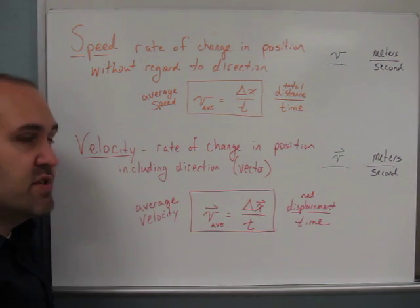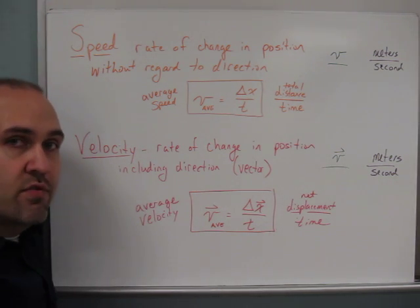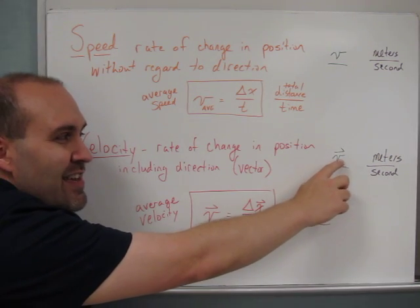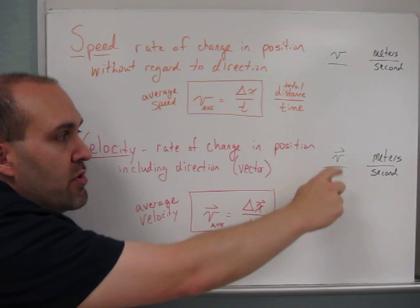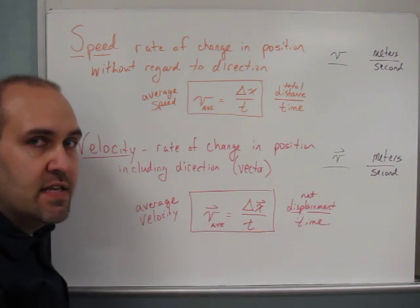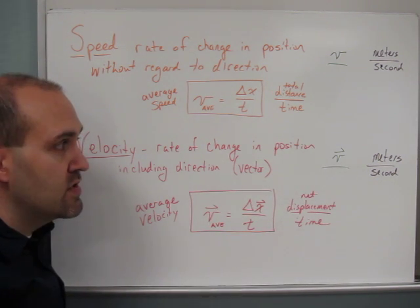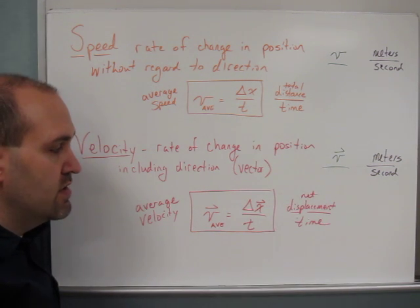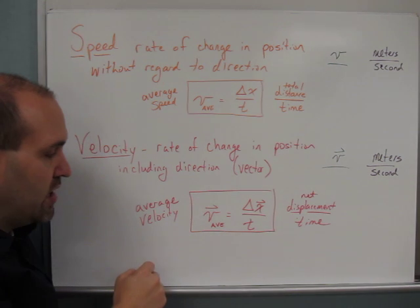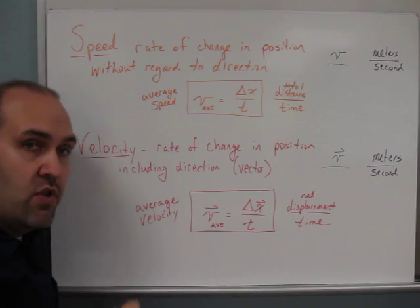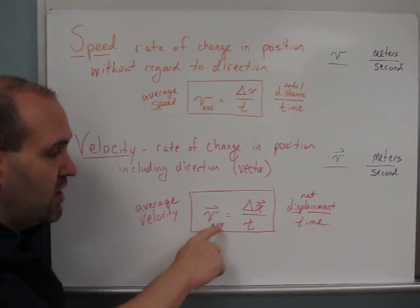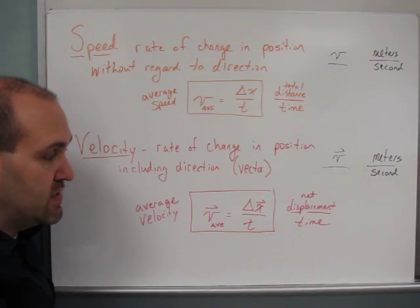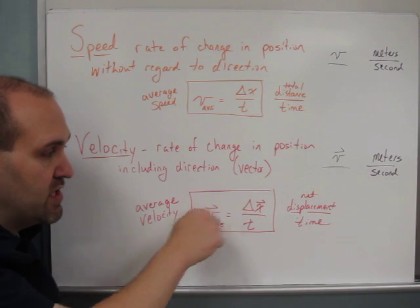Velocity, remember, is the rate of change in position including direction. Velocity is a vector, and so when we abbreviate velocity we write v, a script v again, but we put a little arrow above that to indicate that it's a vector. And so we write v, a vector quantity, and that the direction matters. It's also measured in standard SI units of meters per second. And so you should also put on your equation card, your toolbox, this equation for average velocity. The average velocity is the displacement divided by the time to make that displacement.